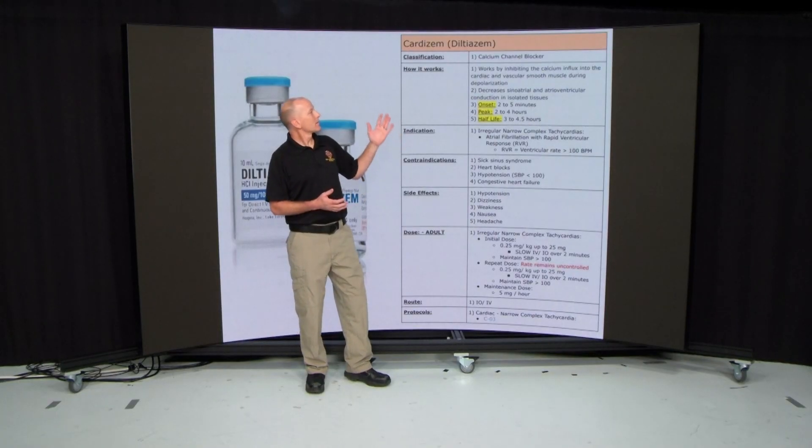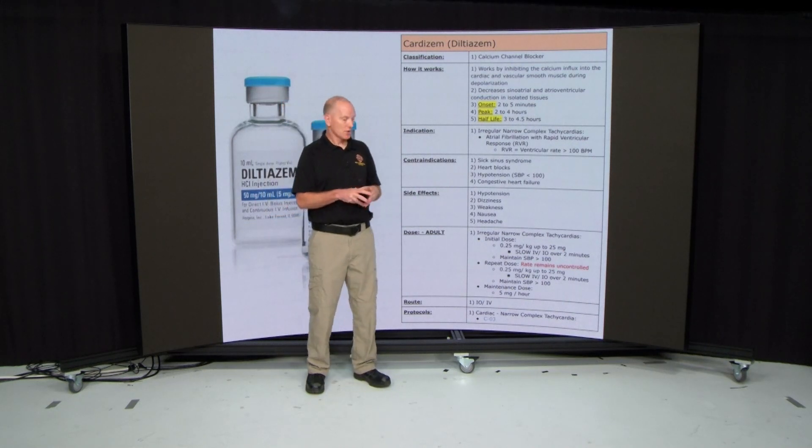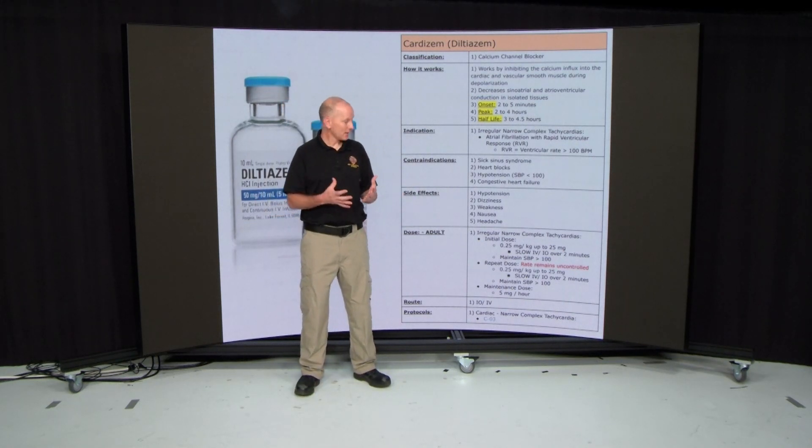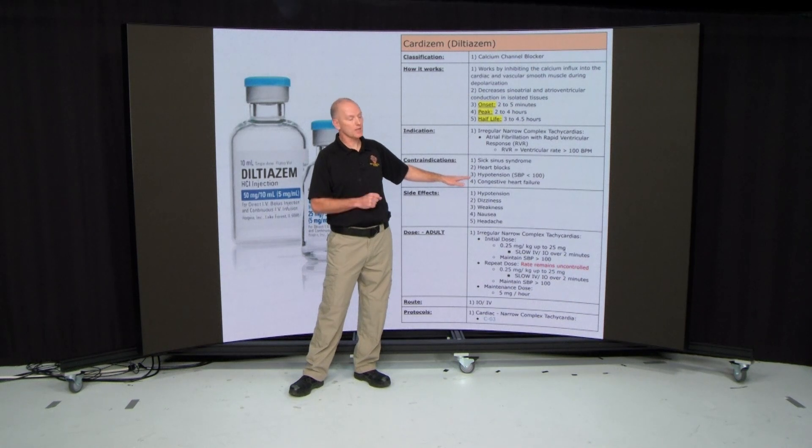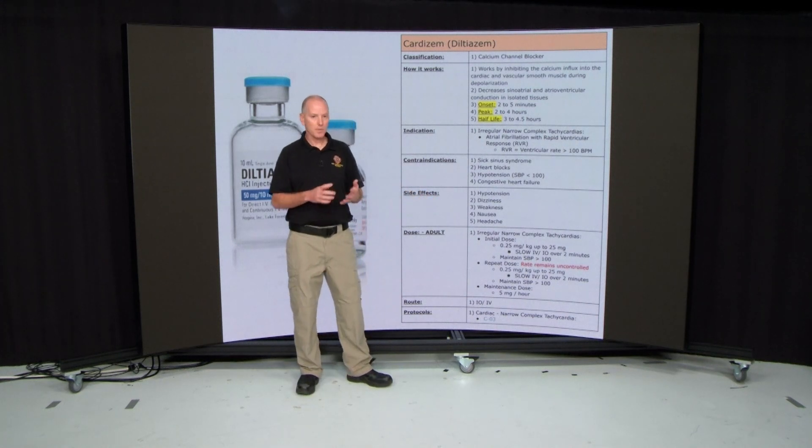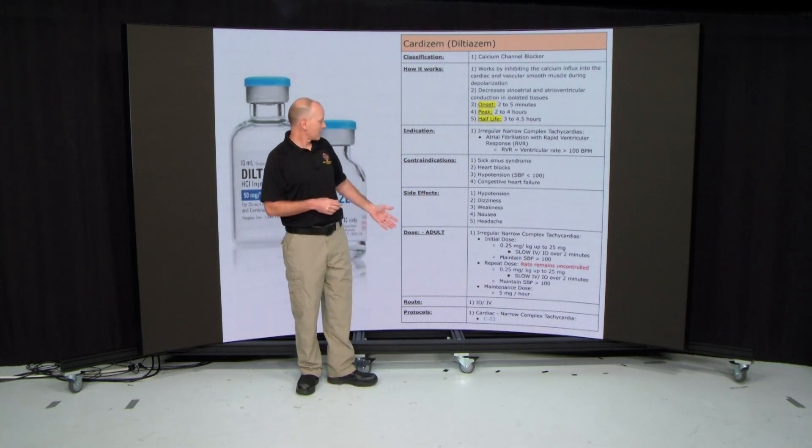Now remember, this is a calcium channel blocker. It's going to cause vascular smooth muscle relaxation. So we're going to expect some mild hypotension. This is why you got to pay attention for your contraindication with a blood pressure less than 100 because you're going to cause some mild hypotension. That's going to cause your patient to be dizziness, weakness. They're going to complain of headache and sometimes nausea.